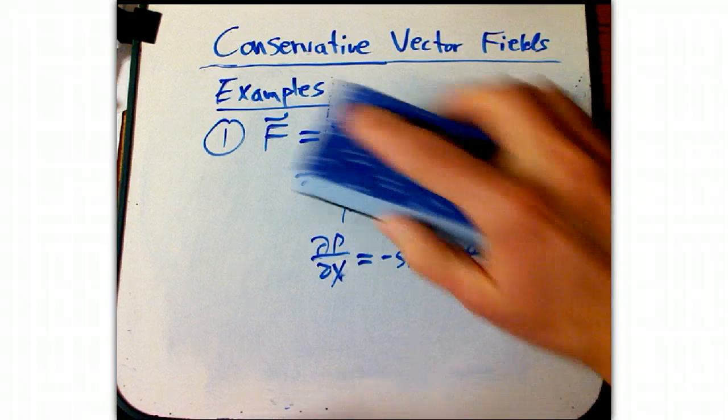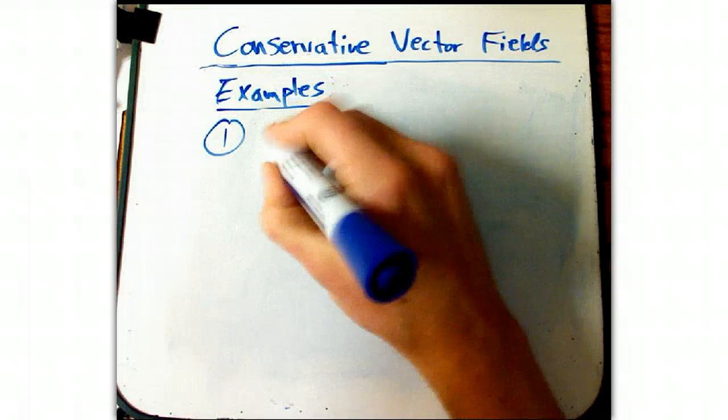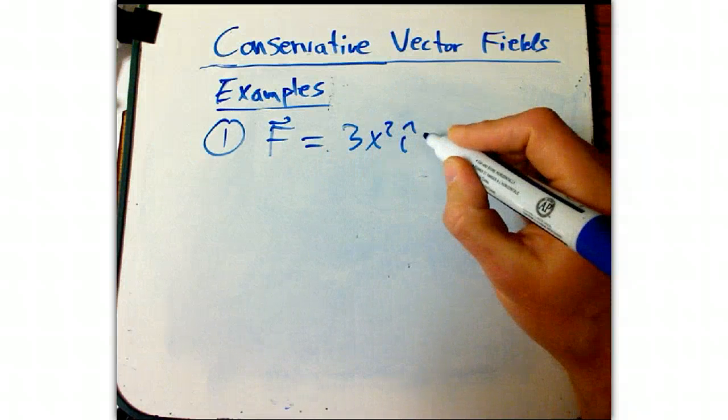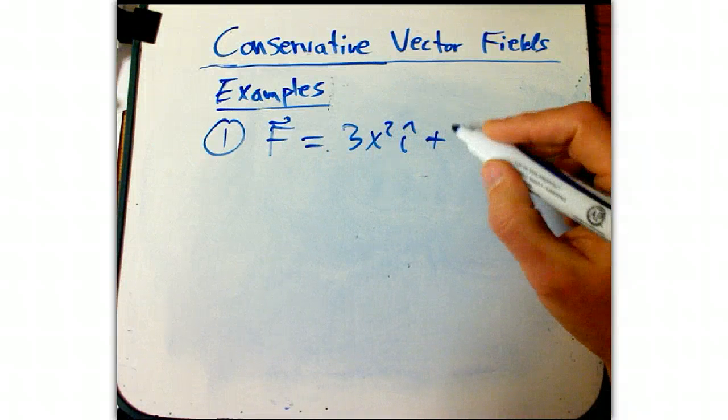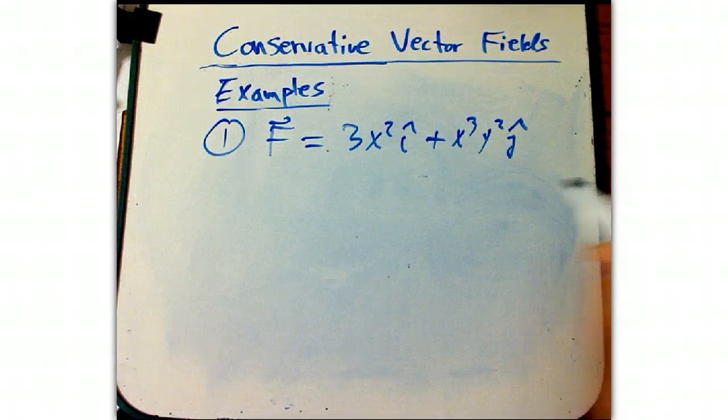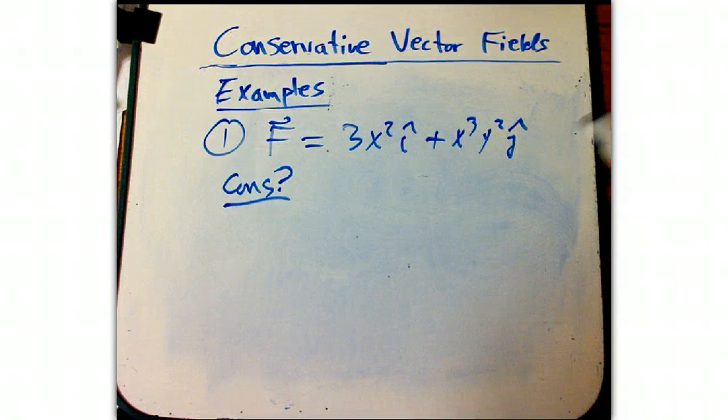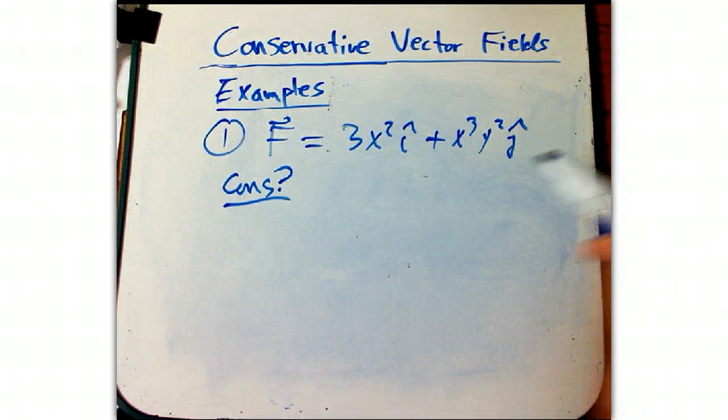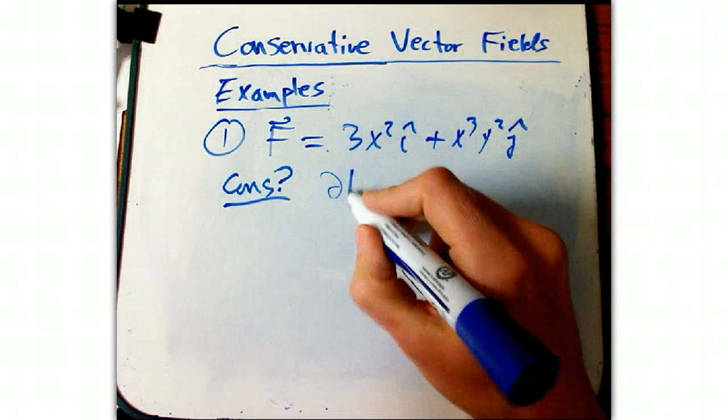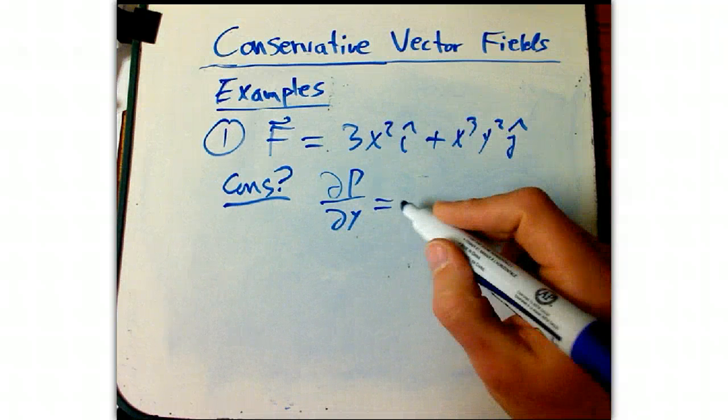So now let's look at a couple more examples. What if I had F equals 3x squared i plus x cubed y squared j. Is this conservative or not? Well, the first thing you do, you don't try to find a potential function. You don't start taking many, many, many line integrals or closed curve integrals. You check dP/dy, that is zero. Interesting.